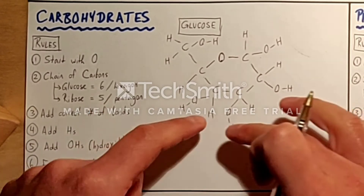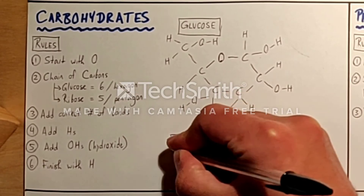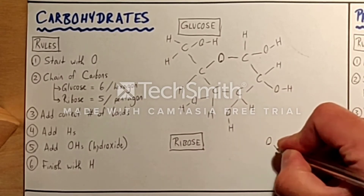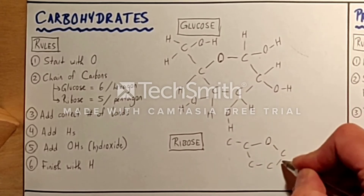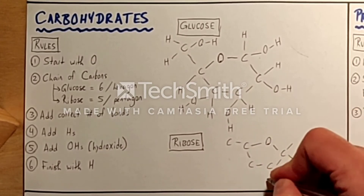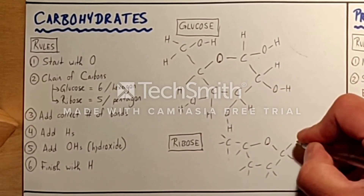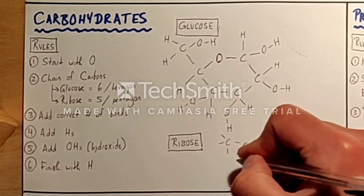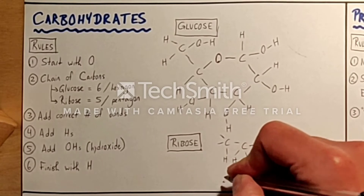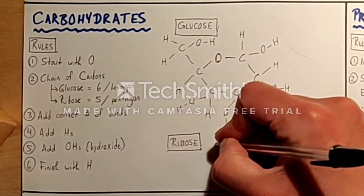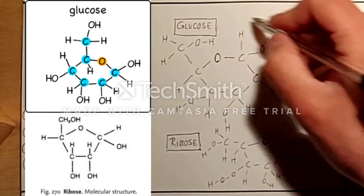So now let's do the same thing for ribose — I will do it a little bit smaller. The same rules will apply. We start with an oxygen, but this time we make a pentagon shape because there are five carbons. Here is my pentagon. I will put the right number of bonds — this one only has one, and this one has three. I will add an H to every carbon and finish the molecule with an H. So this is our drawing of ribose, and this is our drawing of glucose.